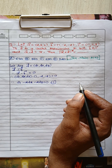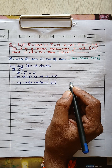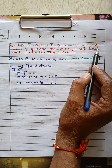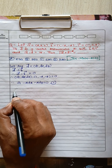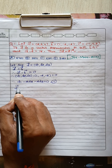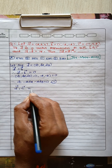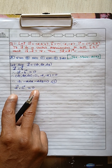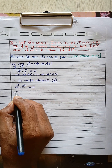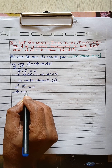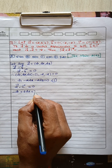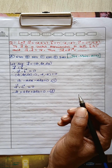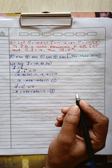Another condition is that vector d is perpendicular to vector c. So we write vector d dot vector c equals zero. By taking the dot product of these two vectors, we get minus d1 plus 4d2 plus 3d3 equals zero. This is Equation 2.